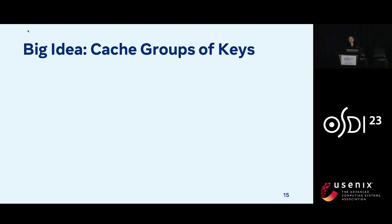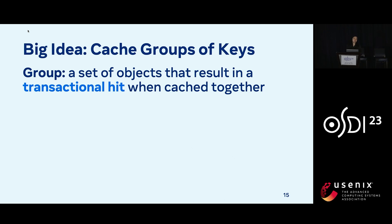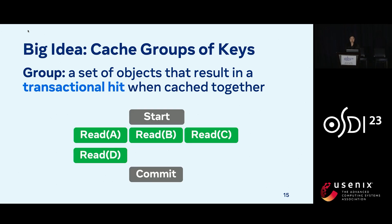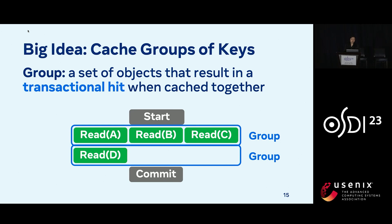The idea behind our approach to caching transactions is simple: we want to cache the groups of keys that are accessed together by transactions. Specifically, a group is a set of objects that result in a transactional hit when cached together. As an example, with this transaction, our first group consists of A, B, and C, since they are accessed in parallel, and the second group is just D by itself. While this seems straightforward, there are significant challenges that arise when we try to do this grouping — I'll give the high-level overview next, and more details can be found in our paper.